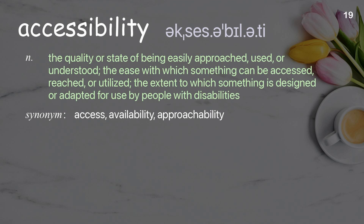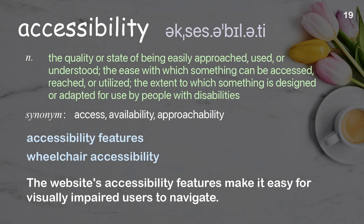Accessibility: The quality or state of being easily approached, used, or understood; the ease with which something can be accessed or utilized; also the extent to which something is designed for use by people with disabilities. Examples: Accessibility features. The website's accessibility features make it easy for visually impaired users to navigate.